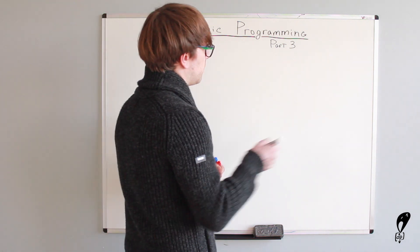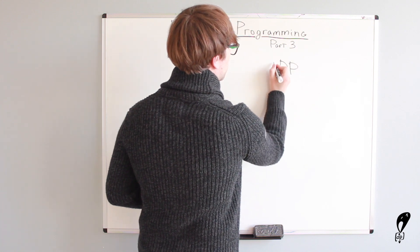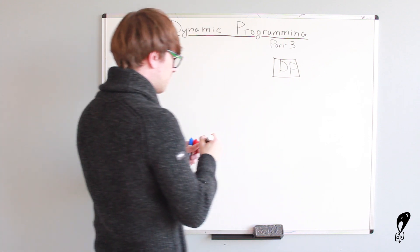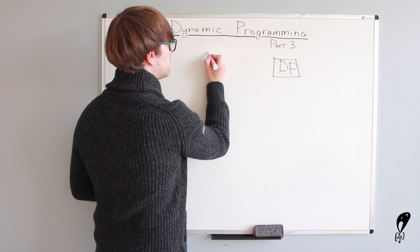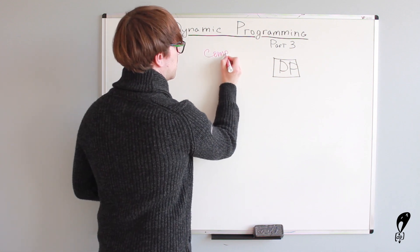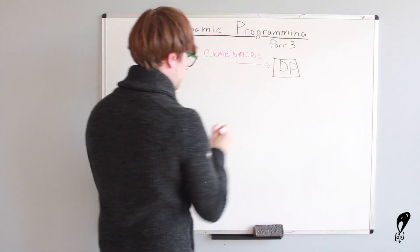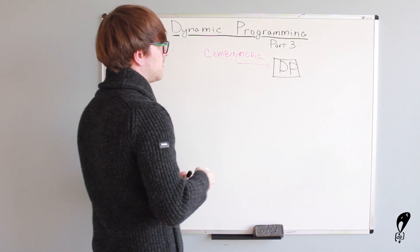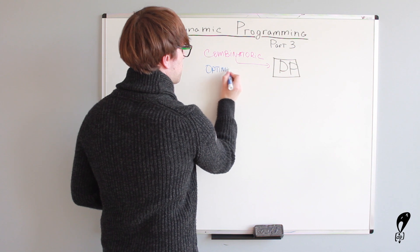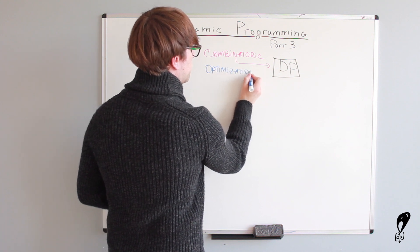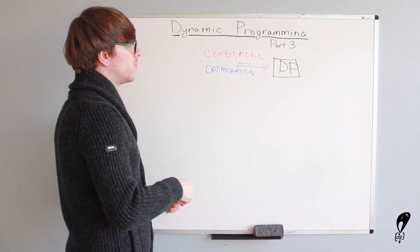Let's write it down. Let's say Dynamic Programming, we have a Dynamic Programming black box over here and this black box receives two types of problems as an input, combinatoric problems, or optimization problems. And as an output, we get a solution.